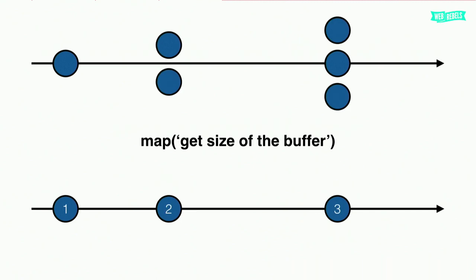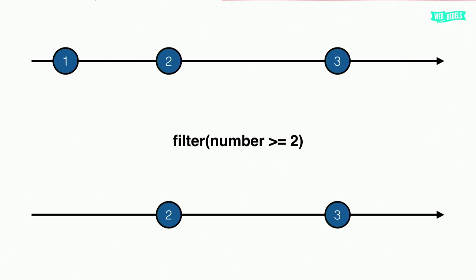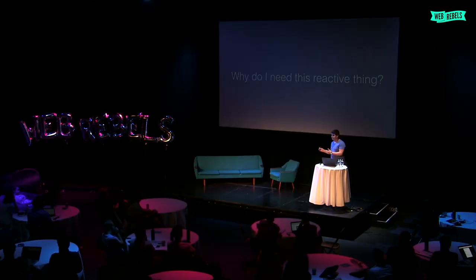Now, what can we do next? We can map — transform and create a new stream from this one. Map through all buffers, get the size of each buffer, and output the number: three, two, and one. We can also filter — for example, filter where the number is greater than or equal to two. So we get three and two, and one gets dropped out. And every time we create a new stream, so there is no data mutation.